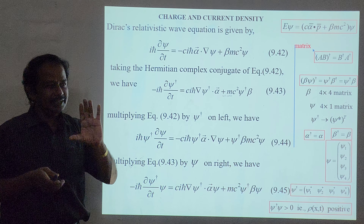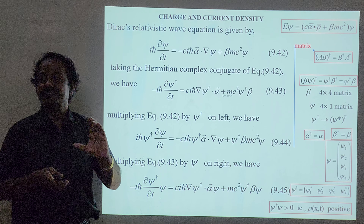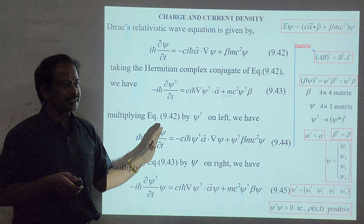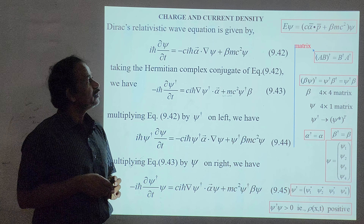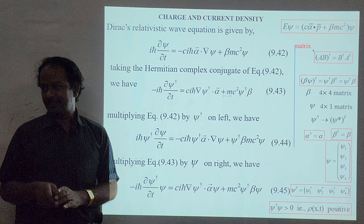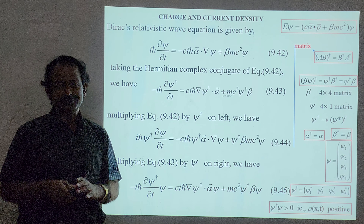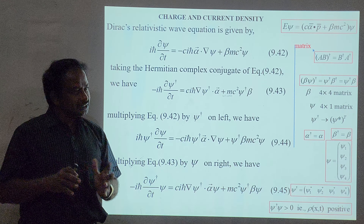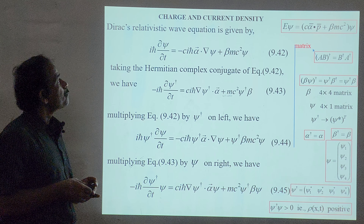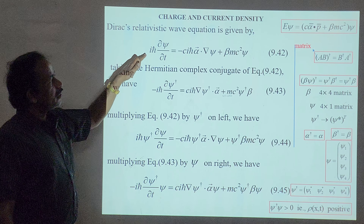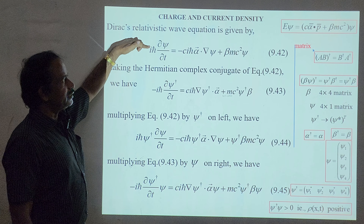However, even for a free particle, charge is conserved and energy is conserved. We are going to discuss whether charge is really conserved. Ultimately, probability must be conserved — that is a very important concept: conservation of energy, probability, and charge. We know Dirac's equation, and we are going to take the Hermitian complex conjugate of this equation.